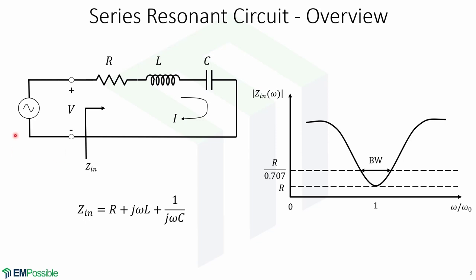Here is a picture of a series RLC resonant circuit. The input impedance of this circuit is given by R plus j*omega*L plus 1 over j*omega*C. Here is a graphic of the frequency response of this circuit, in which the vertical axis is the input impedance magnitude and the horizontal axis is the normalized frequency, where 1 is the resonant frequency. The half power bandwidth is also shown here.